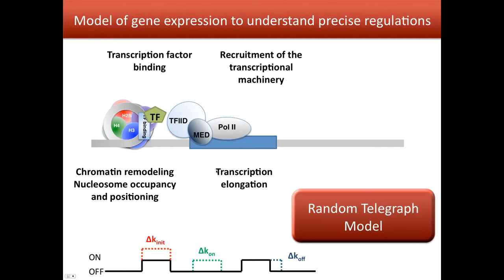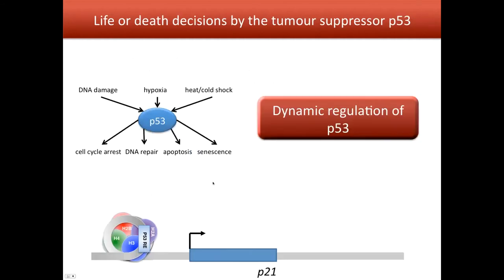To study these mechanisms, I decided to work on p53. p53 is a very interesting gene because it's highly involved in cancer — indeed, in more than 50% of cancers there is a mutation found on p53. p53 can be activated by different means, from DNA damage to heat shock and hypoxia, and it can lead to very different cell responses including cell cycle arrest, DNA repair, apoptosis, or senescence.